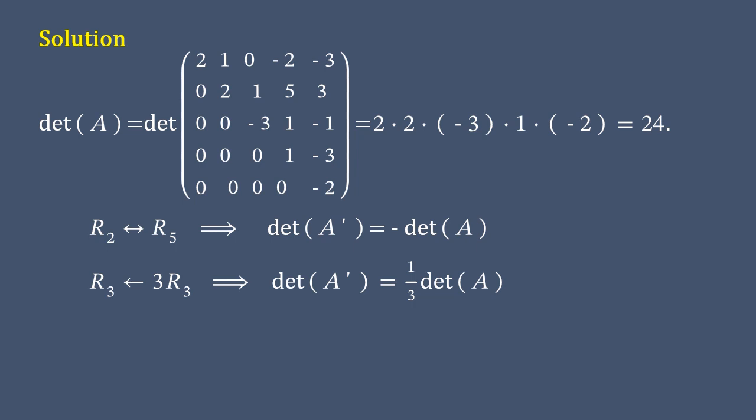Since we want to get the determinant of matrix A prime, which was derived from matrix A, we have to take the inverse of the multiplier. Therefore, we get one third.